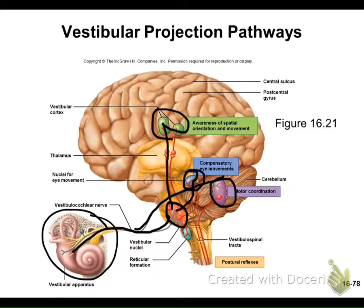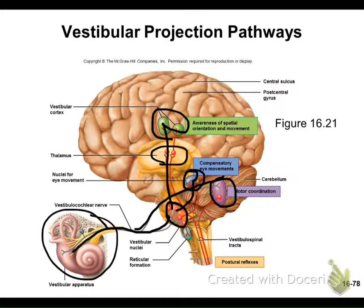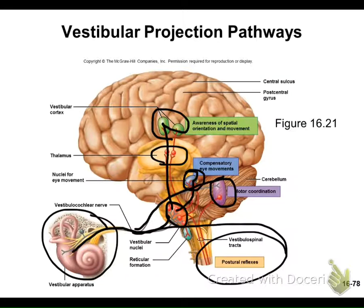Vestibular information also goes to the thalamus, which relays it to the cortex if necessary. Most of our balance is handled involuntarily — beautifully coordinated without any conscious thought. We only become aware of it when we're in trouble. If someone loses vestibular function, balance becomes voluntary. You have to consciously think about it with every step, overdriving all the coordination actively.